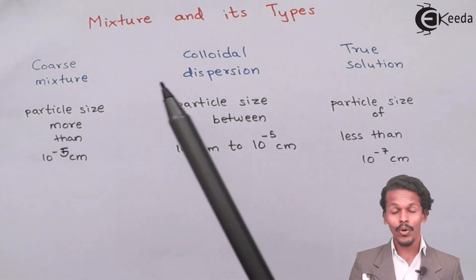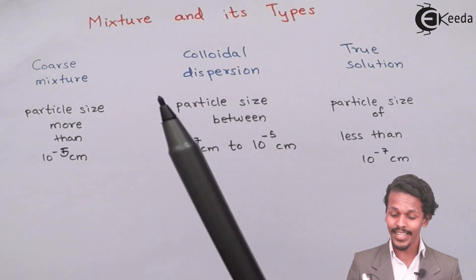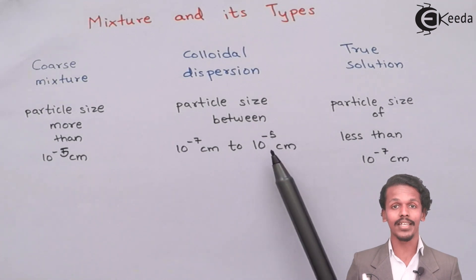The next is Colloidal Dispersion. The Colloidal Dispersion are those substances whose particle size are between 10 raised to minus 7 cm to 10 raised to minus 5 cm.